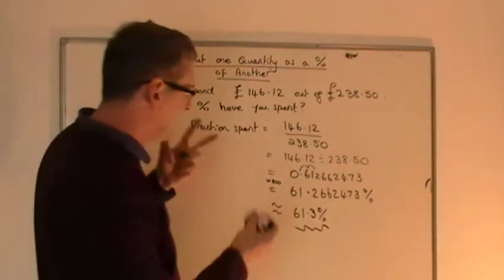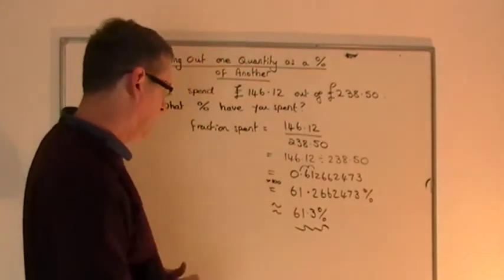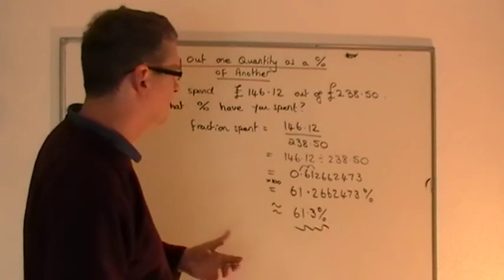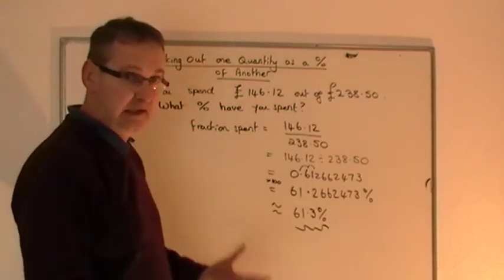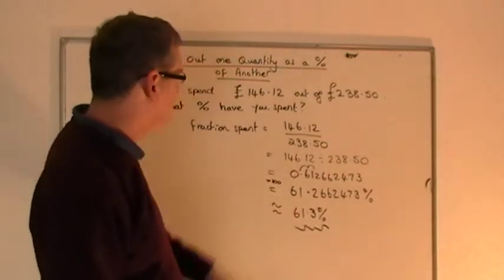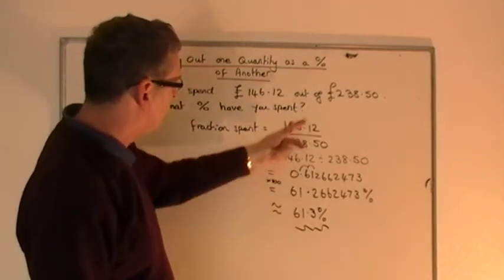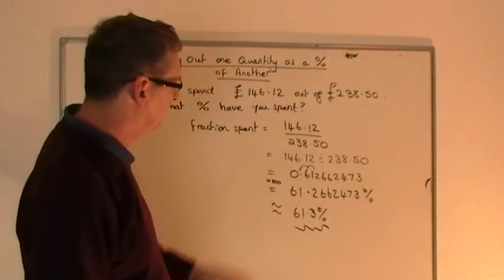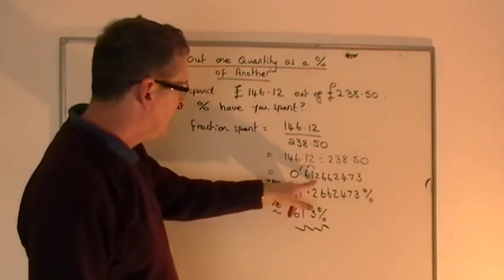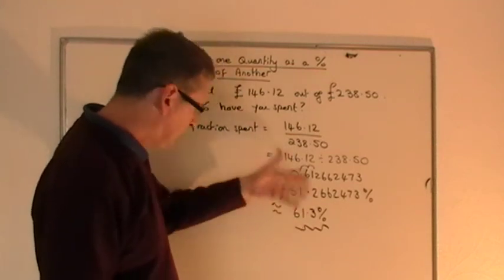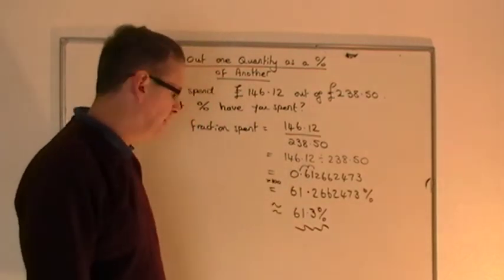And that is a very basic method that you should learn off by heart and be familiar with on your calculator. It works really well, really easy, when you've got really awkward figures. Take the top number, share it by the bottom number, 146.12 share by 238.50. You get the decimal. And then either spot the pattern, 61%, or times it by 100, you get a percentage, 61.3%.